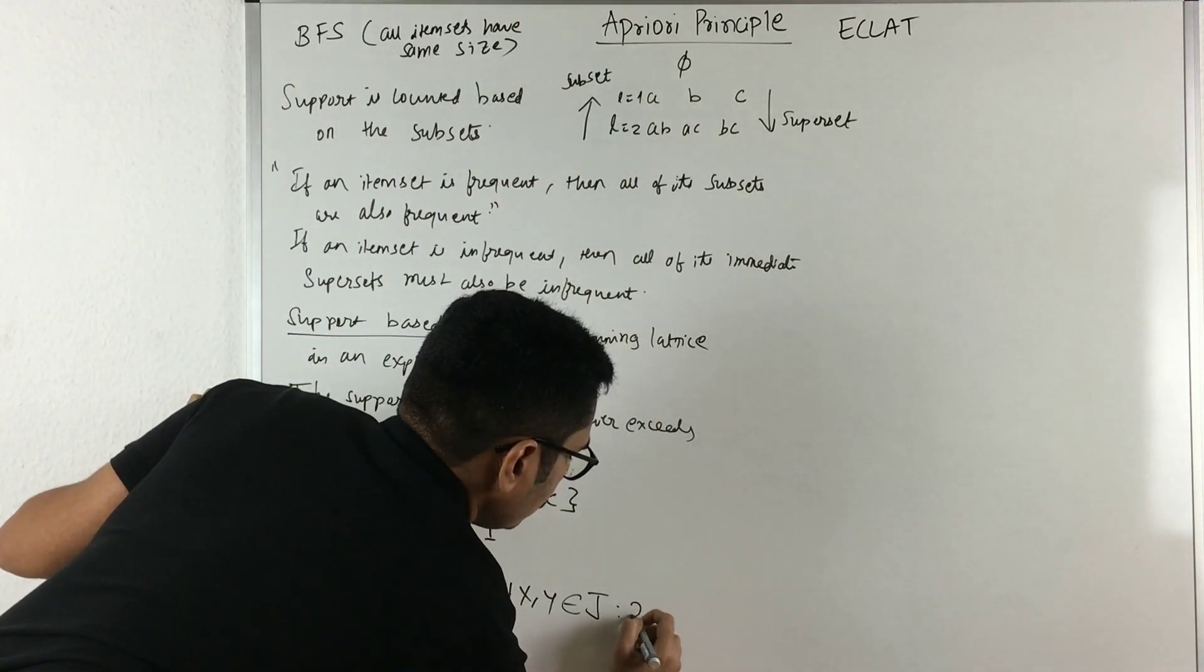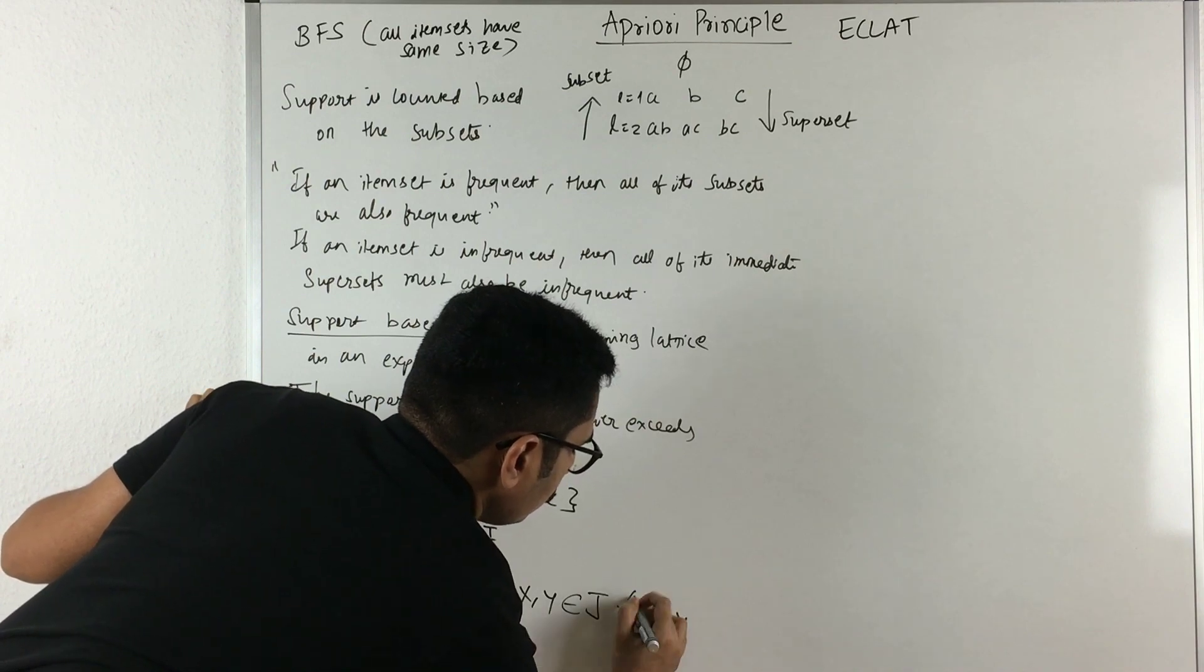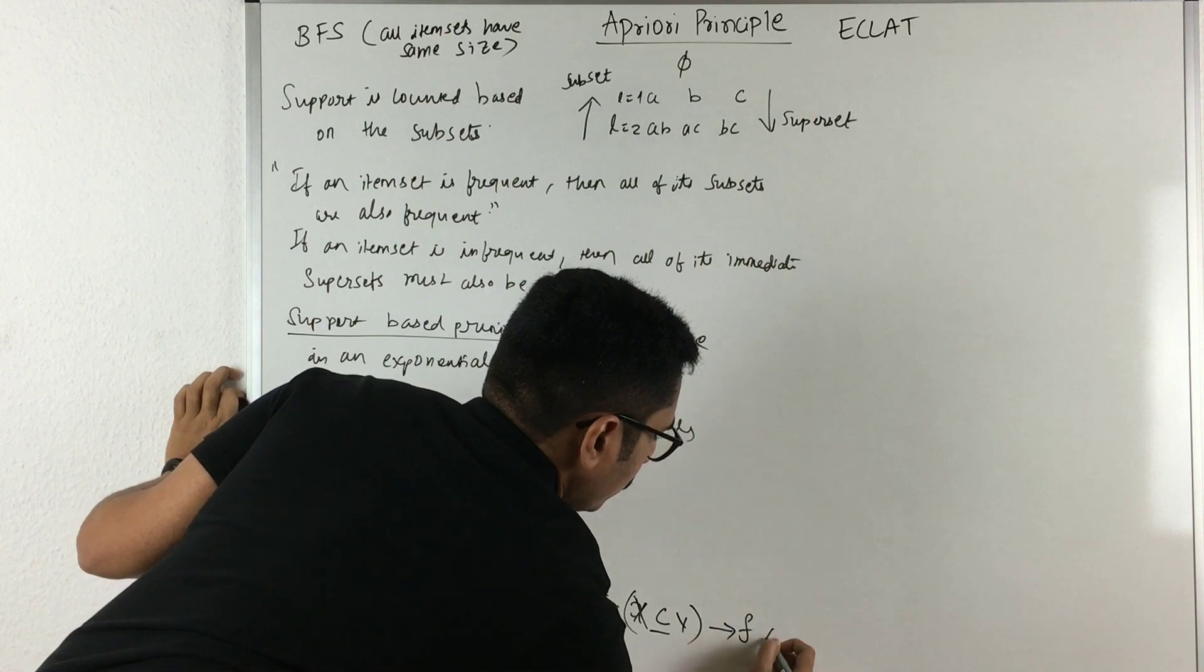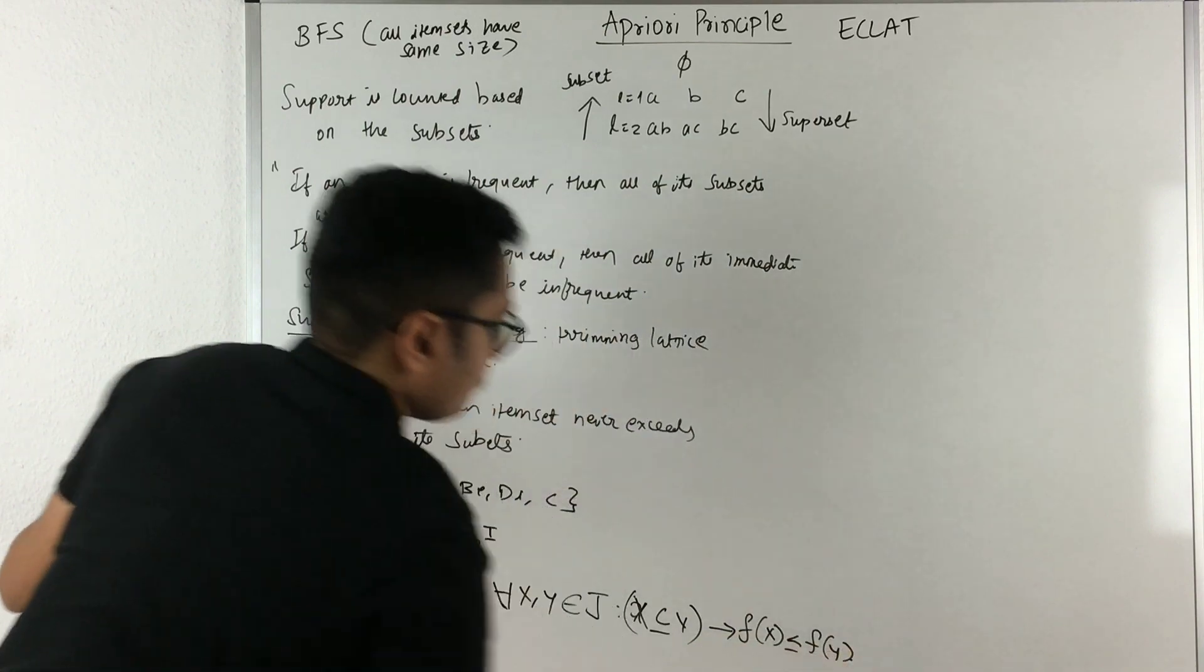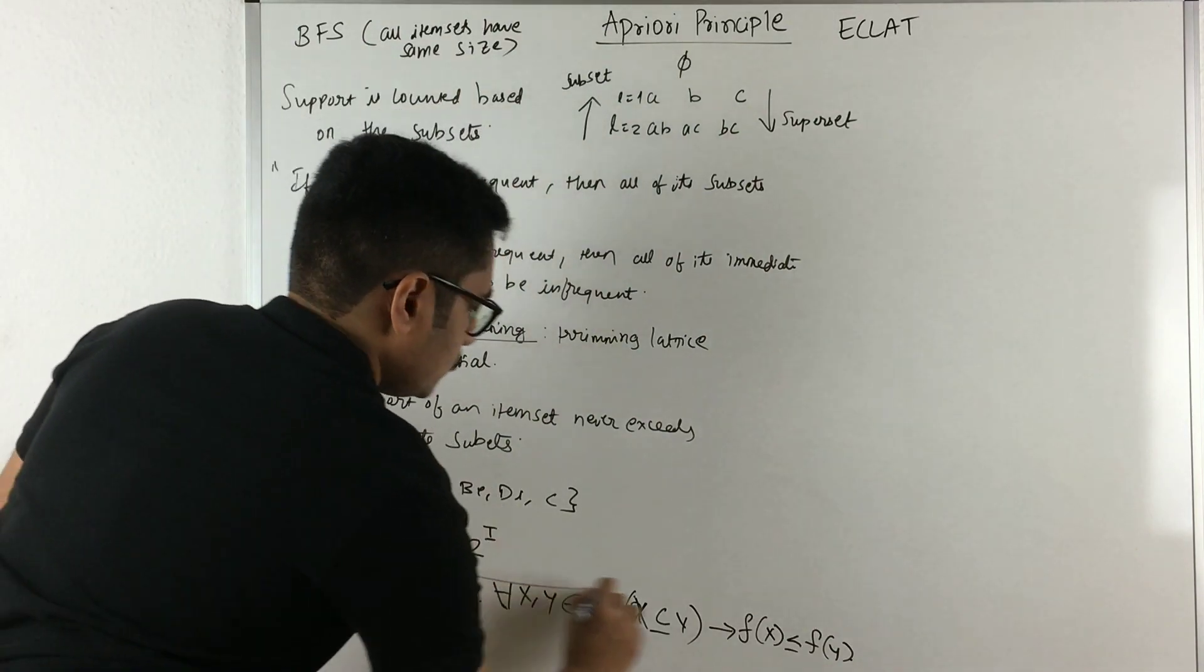You have a mapping that is X is a subset of Y such that F of X is less than or equal to F of Y. So this is the monotonicity principle.